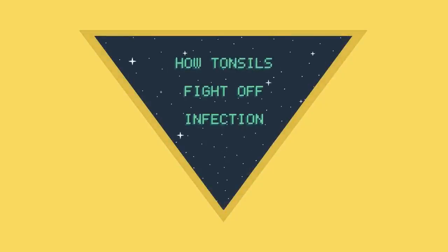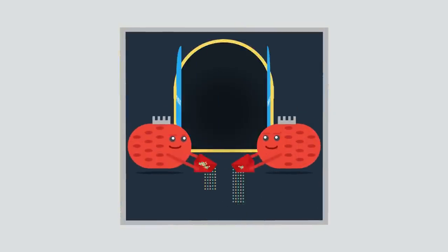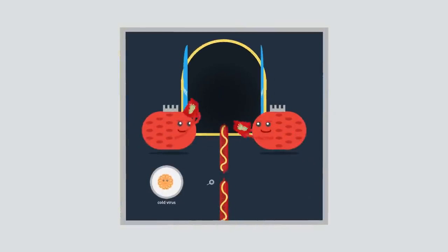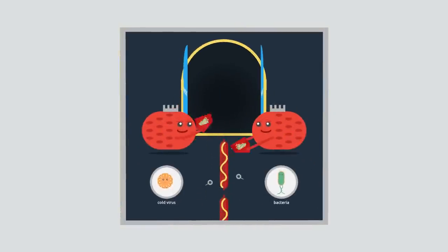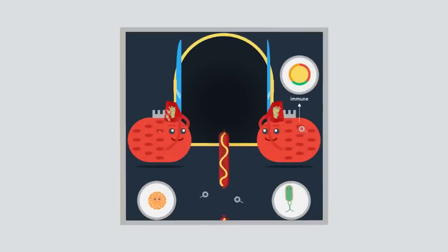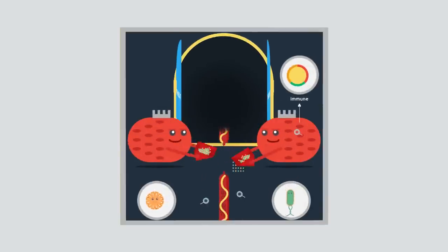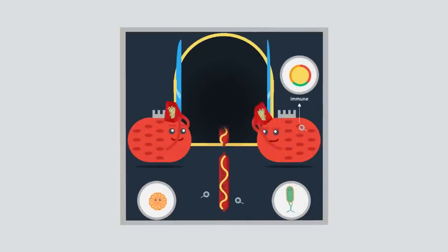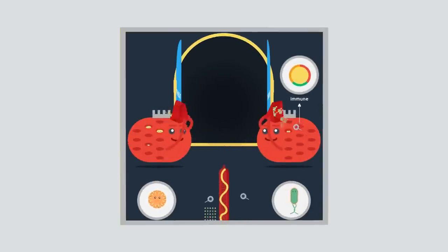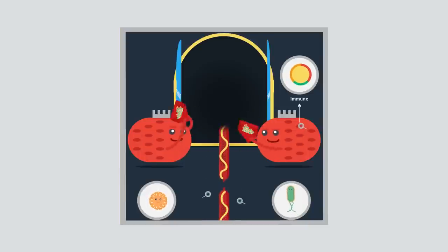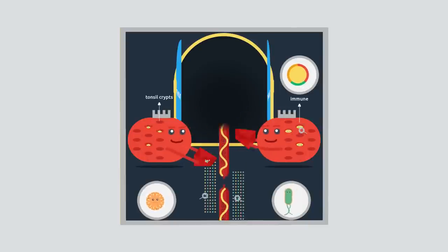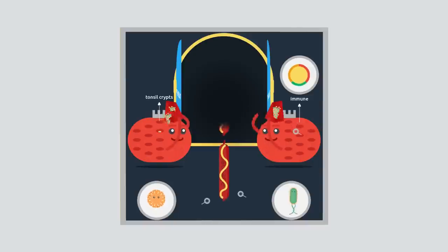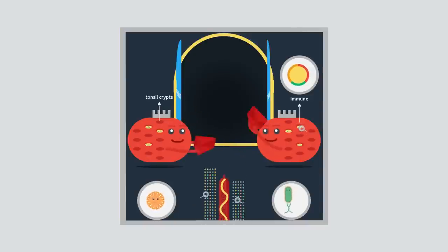The tonsils act like a sentry point for the throat, picking up viruses, bacteria, or particles that are breathed in or swallowed and relaying these to the immune system. The surfaces of the tonsils are pitted with little recesses called tonsil crypts, which increase the surface area and allow more viruses and bacteria to be relayed to the immune system.